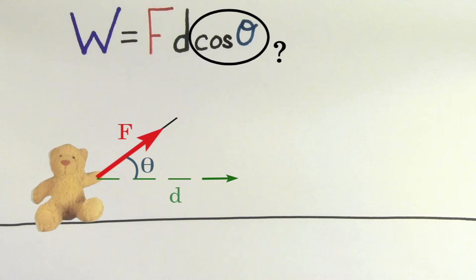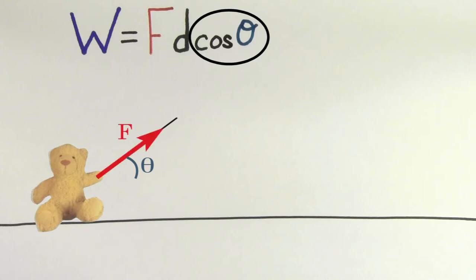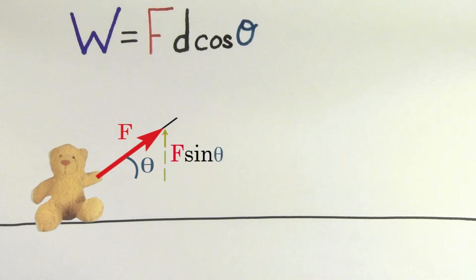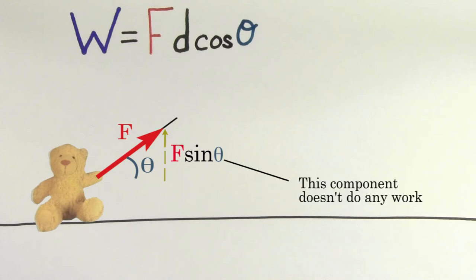You might be wondering what this cosine theta is doing in here. Cosine theta is in this formula because the only part of the force that does work is the component that lies along the direction of the displacement. The component of the force that lies perpendicular to the direction of motion doesn't actually do any work.